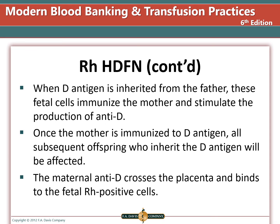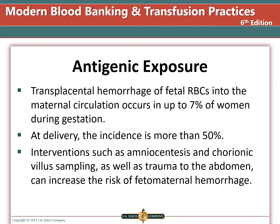If the D antigen is inherited from the father, those fetal cells immunize the mother and stimulate production of anti-D. Once the mother is immunized to the D antigen, all subsequent offspring who inherit the D antigen will be affected. The maternal anti-D crosses the placenta and binds to the fetal red blood cells.